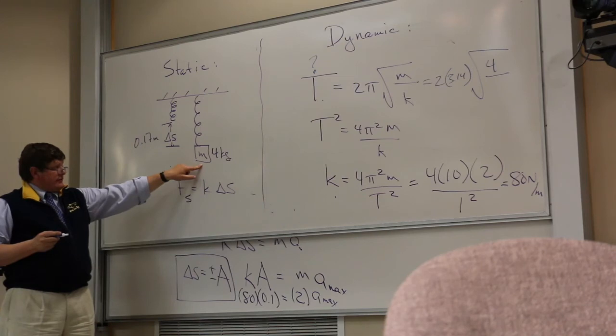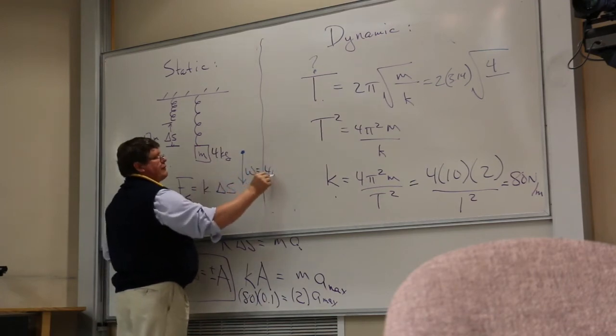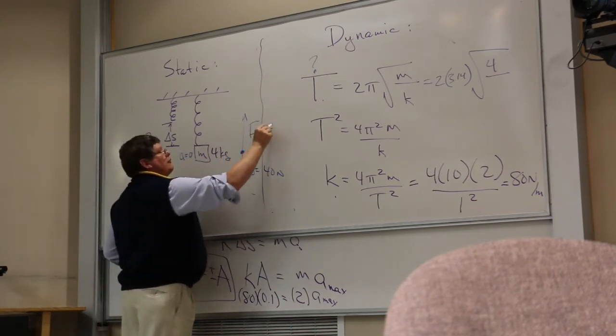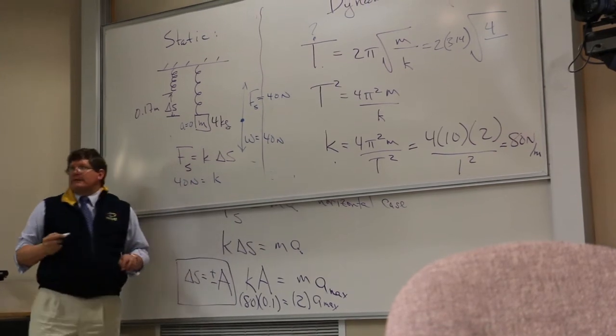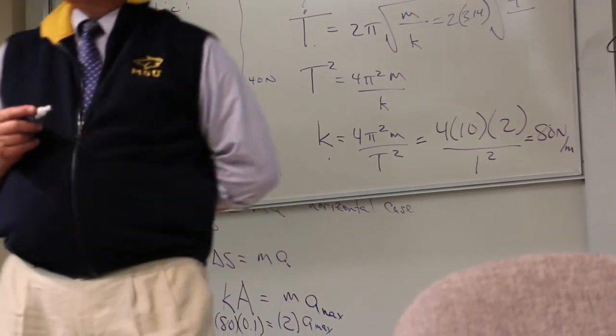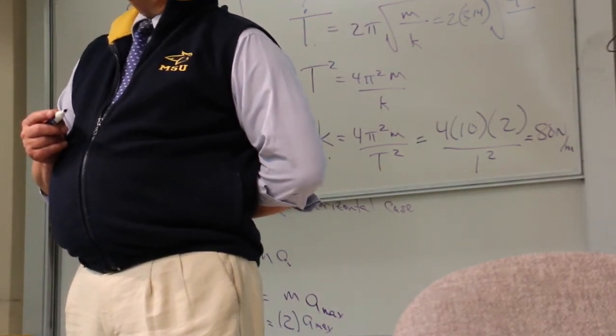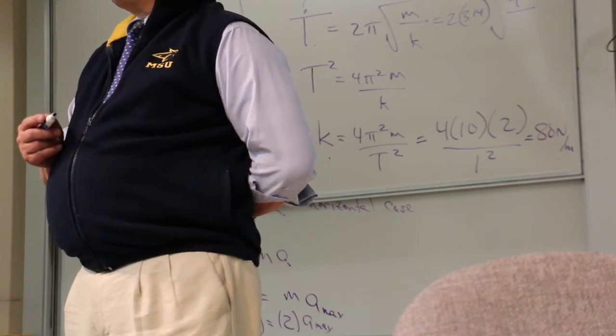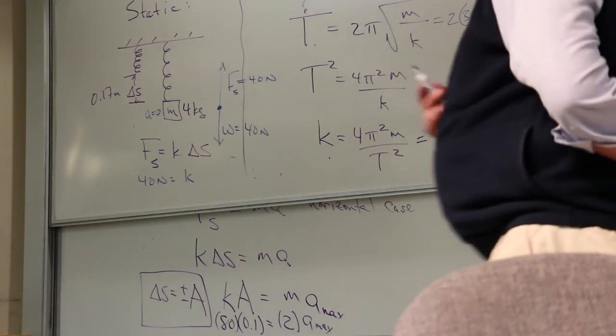In this case, you use the static approach. You have a weight force. If this is 4 kilograms, this would be 40 newtons. That means the force by the spring, if there's no acceleration, would be also 40 newtons. You use Hooke's law. What do you do for delta S? Do you use the 17 centimeters or the 10 centimeters or 27 centimeters? The amplitude is 10 centimeters. How does the whole system depend on the amplitude? Not at all. So why did I give you that information? To see if you would use that.